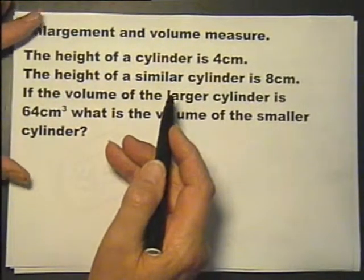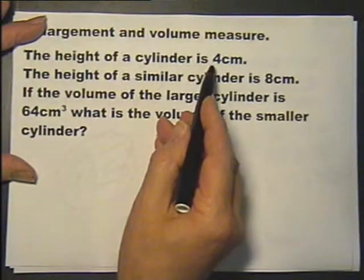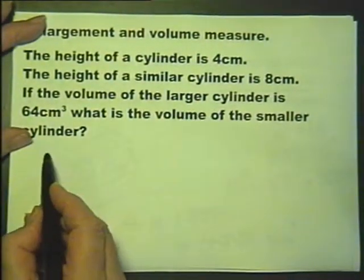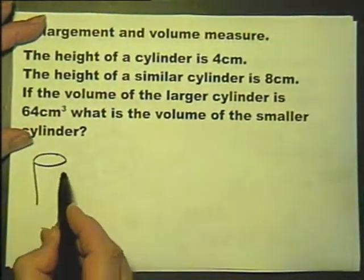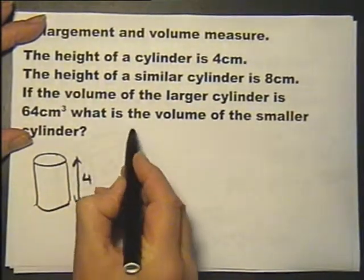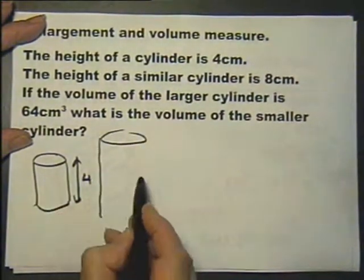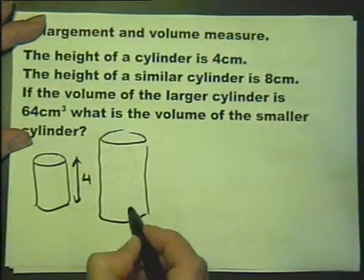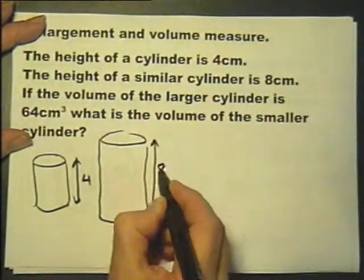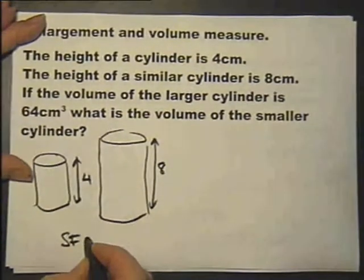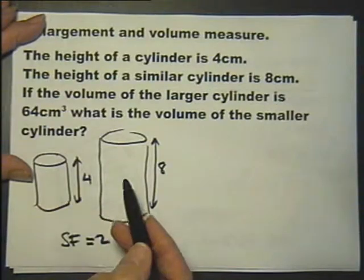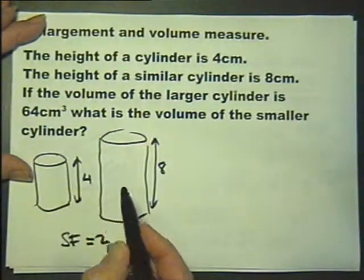This question's a little bit different. The height of a cylinder is 4 centimetres and the height of a similar cylinder is 8 centimetres. Similar means that it is a perfect enlargement, enlarged in all respects similarly. So this is an enlargement of scale factor 2, all its linear dimensions are doubled.